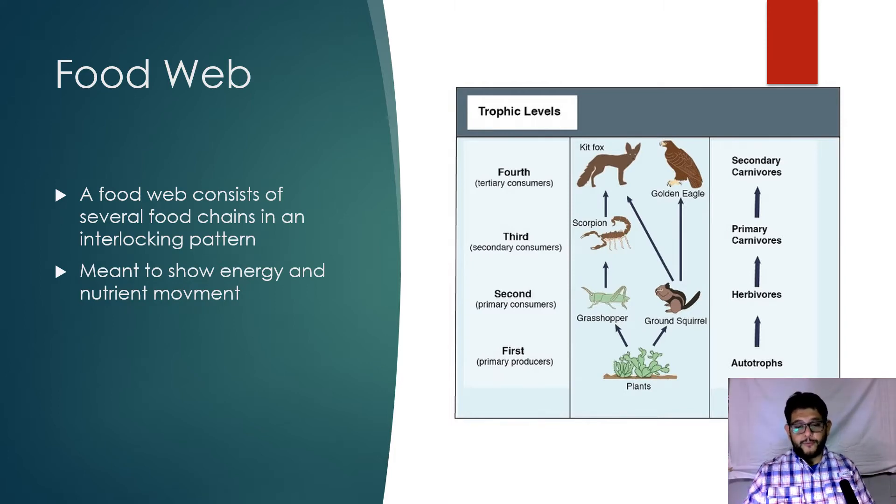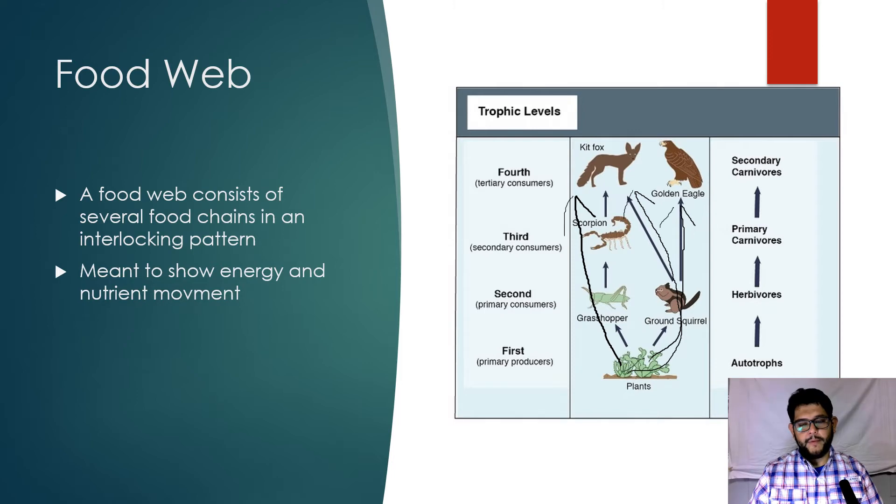If you look at the middle portion of this picture here, each direction of arrow flow is one food chain, but you have multiple food chains here, and that's what makes up a food web. This is a very simple trophic level but it can get much more complex.